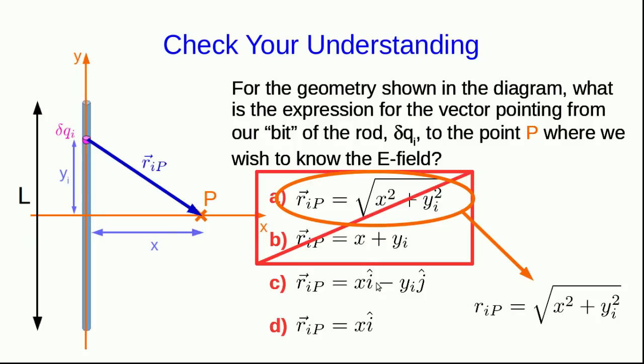And it goes down in the y direction, a distance that we've called y_i, and so its y component is negative y_i. And so then stick those together to make it into a vector with your unit vectors, and there is the r_IP vector.